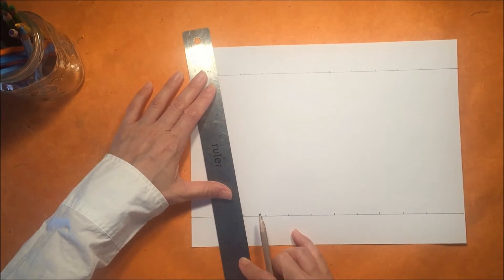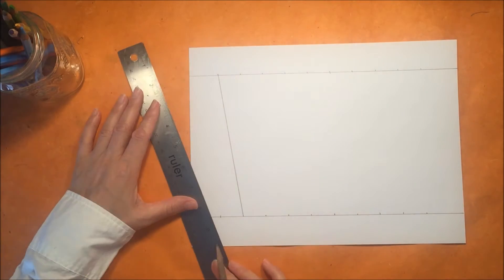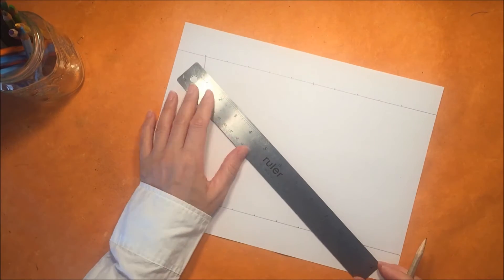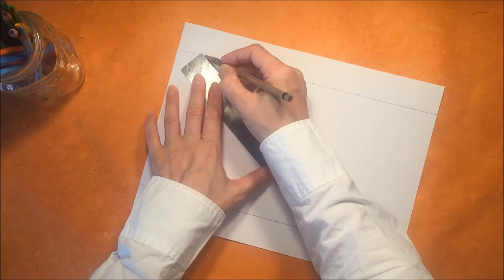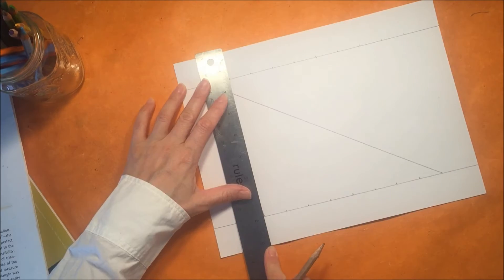This will be the first part of our triangle. Then you want to connect that top point with the farthest point on the right side.